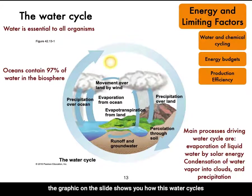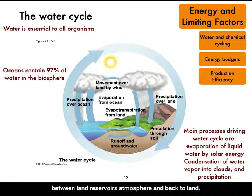The key processes driving the water cycle are evaporation of liquid water by solar energy, condensation of water vapor into clouds, and precipitation. The graphic on the slide shows how this water cycles between land, reservoirs, atmosphere, and back to land. Let's look at this a different way.